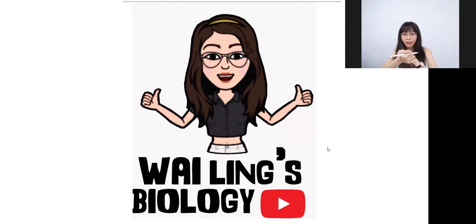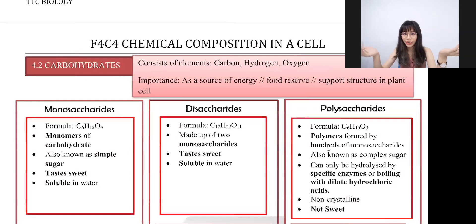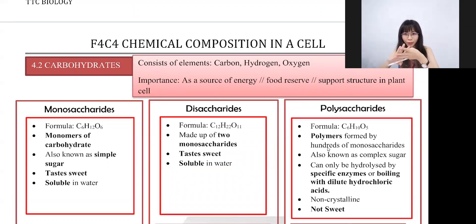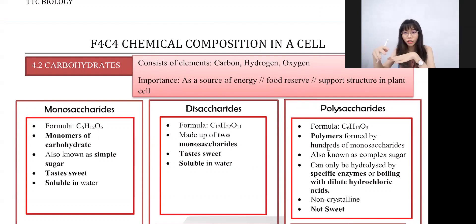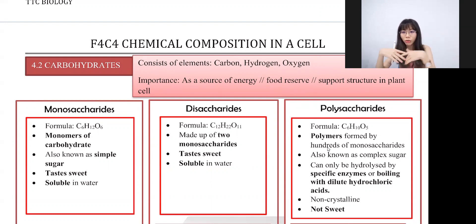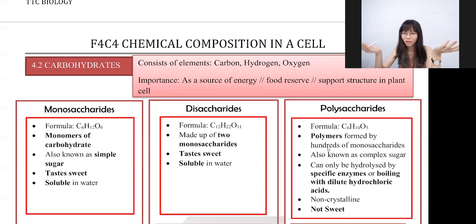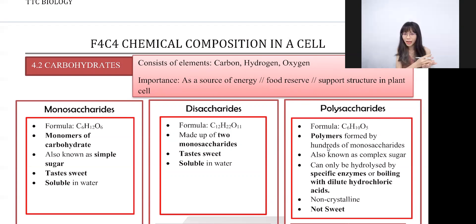We have to learn about sugar and the examples of each sugar type. When we talk about carbohydrates, most of you will think of rice, porridge, or potato. But did you know that fruits are also carbohydrates? So it's not a good idea to replace your main meal with fruits if you're on a diet, because some fruits contain more sugar than rice. You can replace high-sugar fruits like watermelon or grapes with green apples, which contain less sugar.